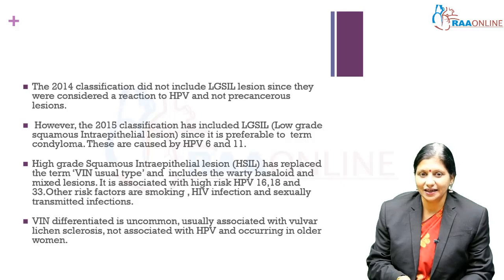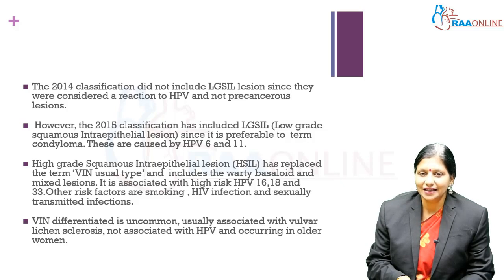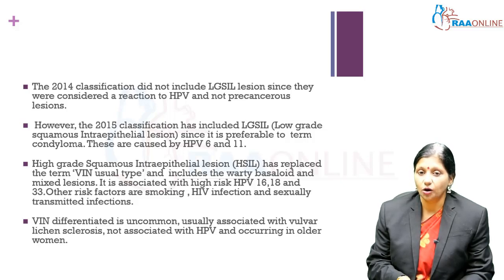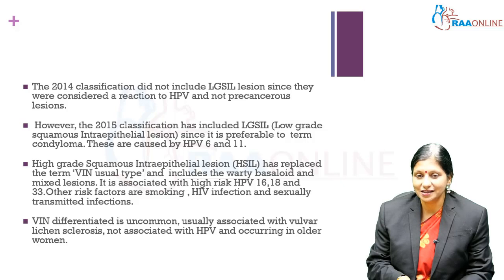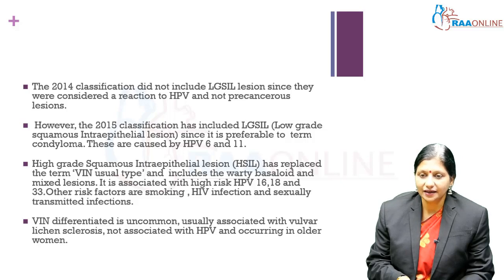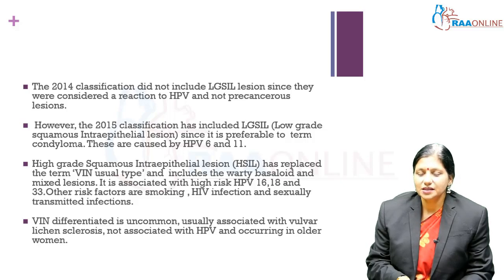Low grade lesions are associated with non-oncogenic HPV 6 and 11 and are not likely to become malignant. HSIL — high grade squamous intraepithelial lesion — is associated with oncogenic HPV 16, 18, and 33, and is also linked to smoking, HIV, and other sexually transmitted diseases. The type of vulval cancer that develops from these lesions is the warty/basaloid type, predisposing to carcinoma of the vulva in young women with STDs.